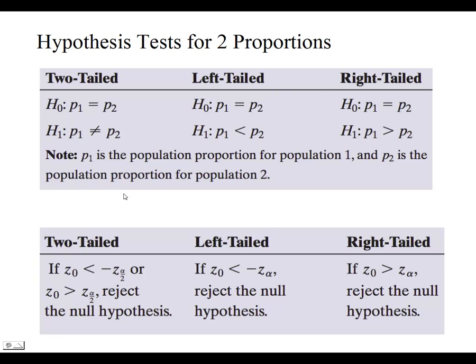The hypothesis test, they're going to look the same as they have in pretty much every other thing. We're looking at the null using the equal to sign. So we're looking for the proportion from the first population to be equal to the second population in all three cases. And our alternative hypothesis, we have the doesn't equal, the first one less than the second, and then the first one greater than the second, depending upon what it is we're looking for.